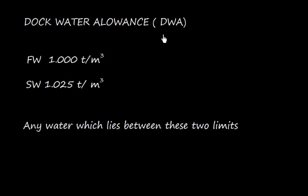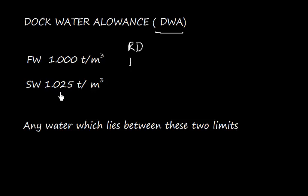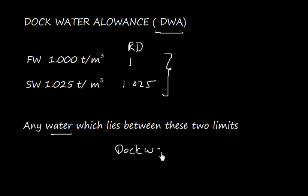Dock water allowance, that is DWA. First let me define what dock water is. We know that fresh water density is 1 ton per cubic meter, or relative density is 1, and salt water is 1.025 ton per cubic meter with a relative density of 1.025. Any water which has a density between 1 and 1.025 is called dock water.